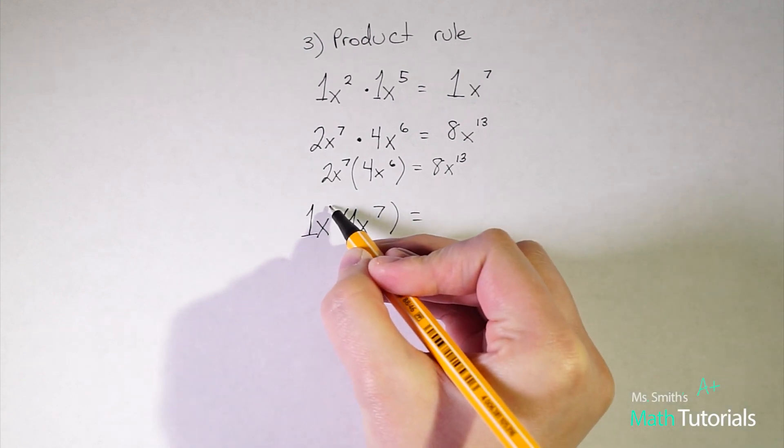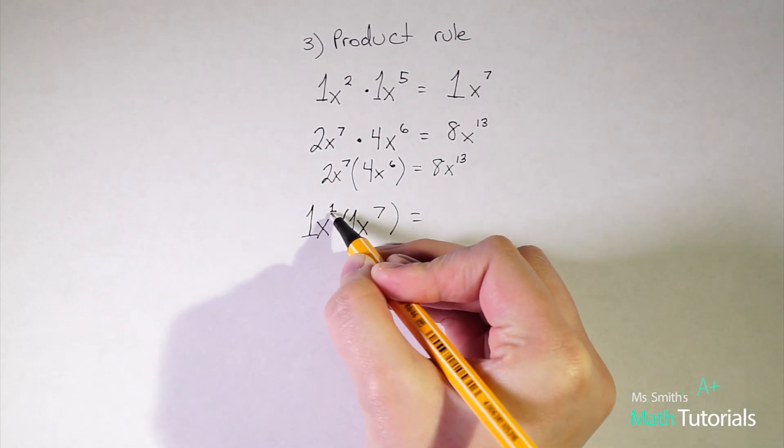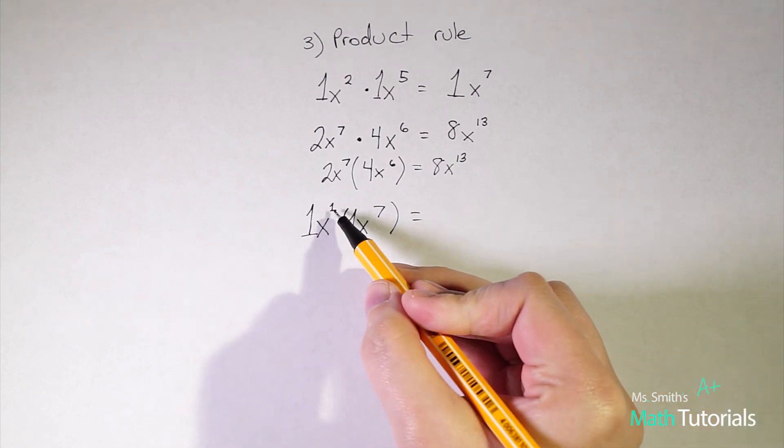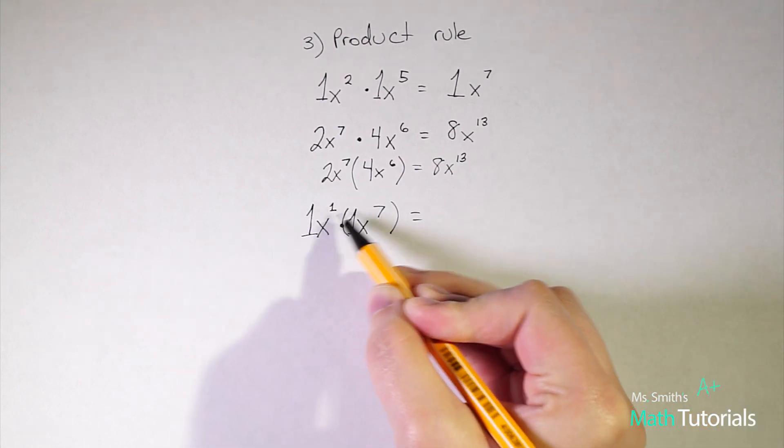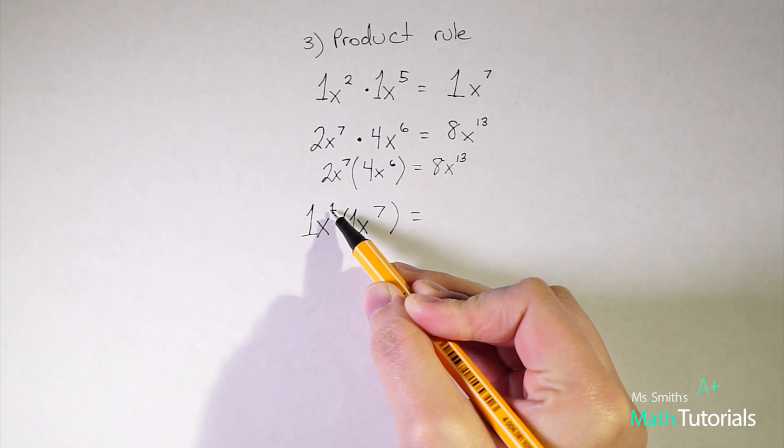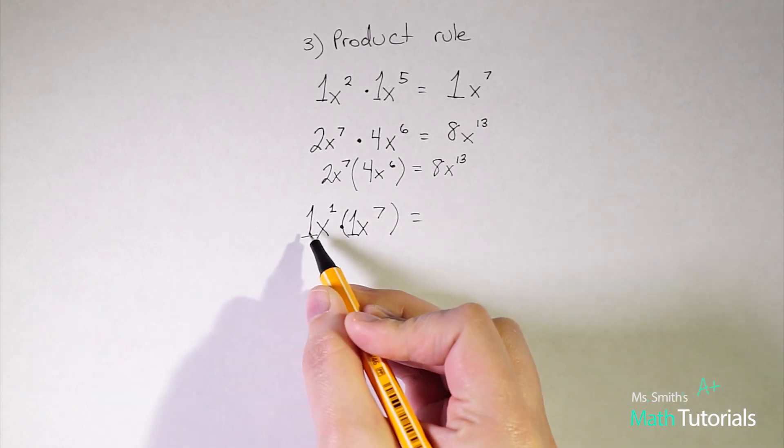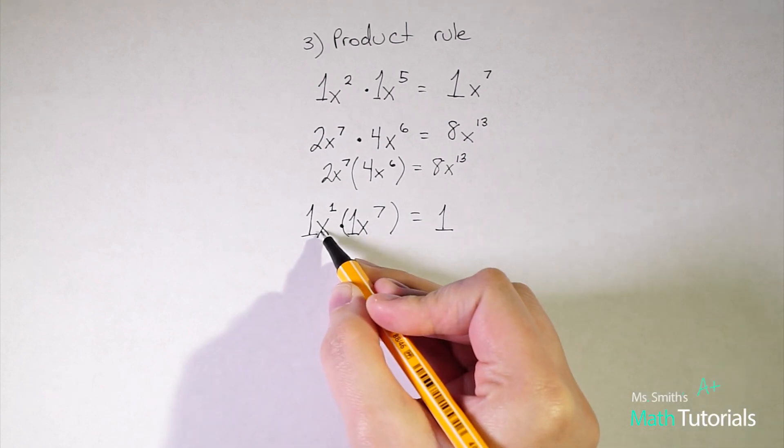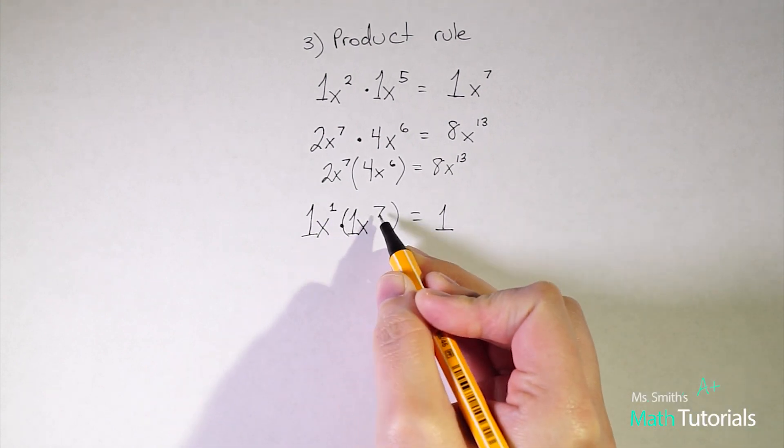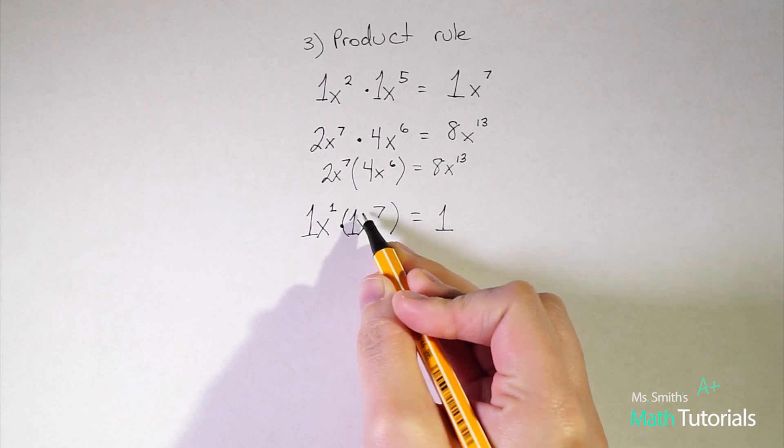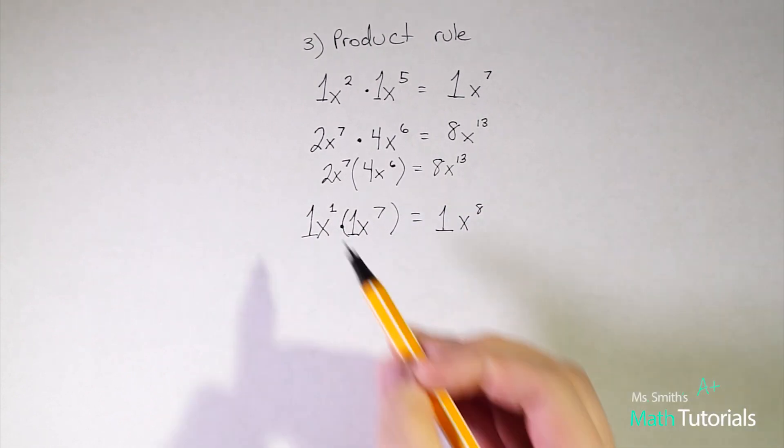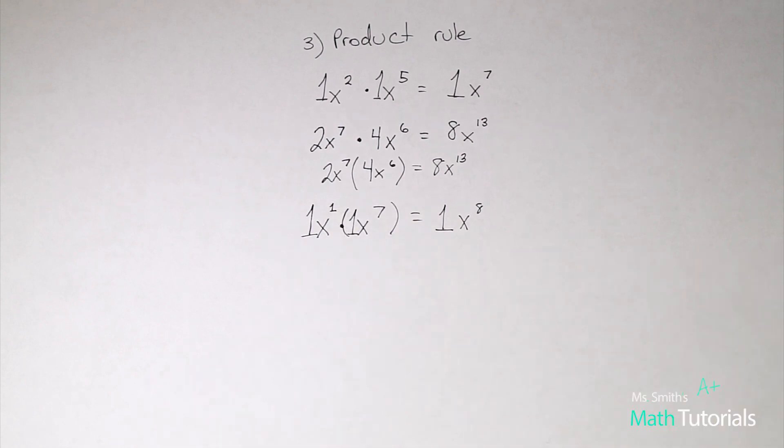But in the same way that we have an understood one in front of the x there and also here, we also have an understood exponent of one. So if there's not an exponent written it's understood that it's one. So when we're adding we have to remember there's a one there. So we would proceed one times one is one, x to the first times x to the seventh, one plus seven is x to the eighth. So very easy to forget sometimes that there is an understood one there but it's really important.